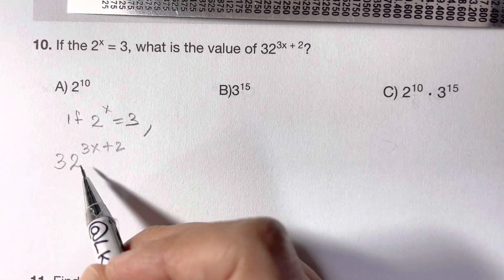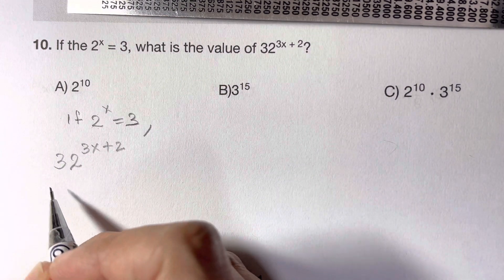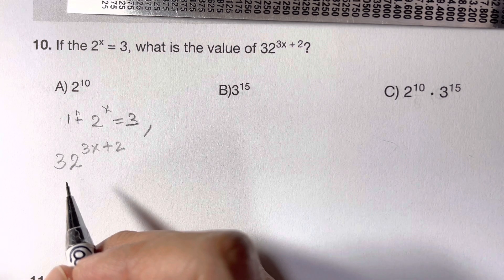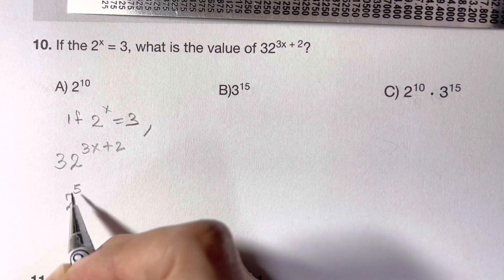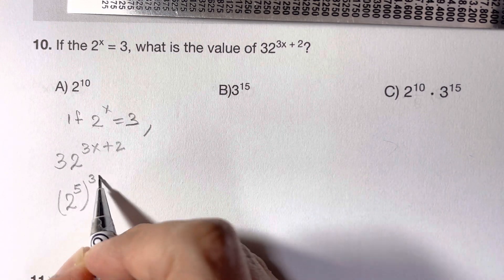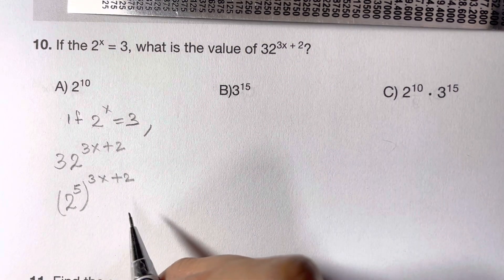32 can be turned into 2, right? So that's 2 to the power of 5. 2 times 2 is 4, 4 times 2 is 8, 8 to 16, 16 times 2 is 32. So 2 to the power of 5 is 32. Whole to the power of we have this power 3x plus 2. Now what can we do here?